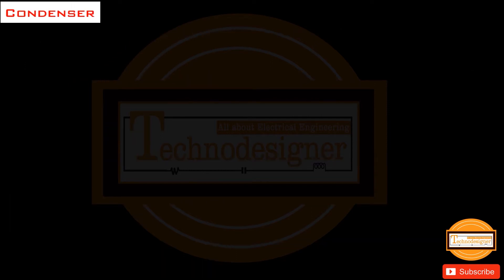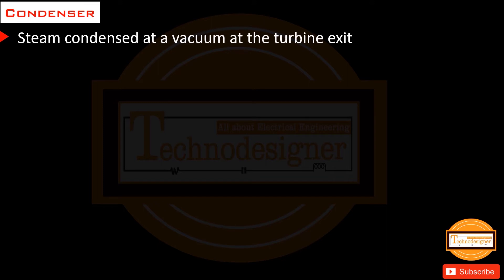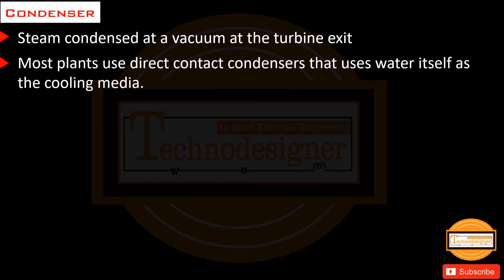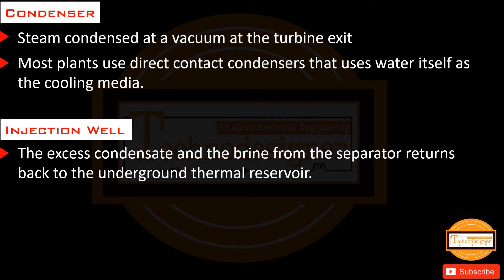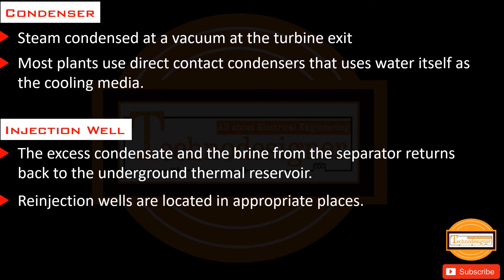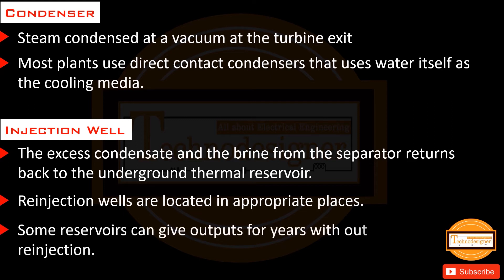Steam is condensed by a vacuum at the turbine exit. Most plants use direct contact condensers that use water itself as the cooling medium. The excess condensate and brine from the separator return to the underground thermal reservoir via re-injection wells located in appropriate places. Some reservoirs can provide outputs for years without re-injection.